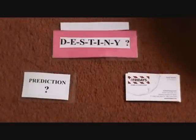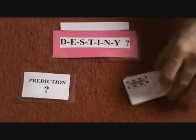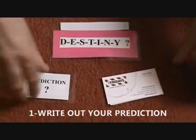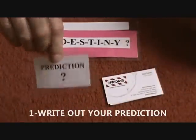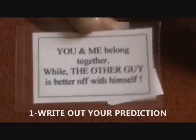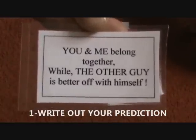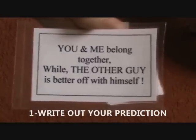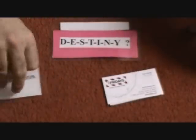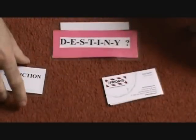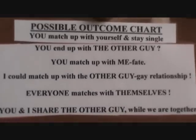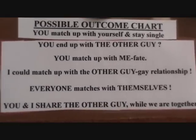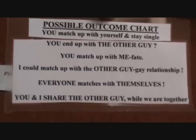So let's learn this trick. It's virtually impromptu — the pack is flat and you can use blank business cards. You're going to need a prediction that says you and me belong together and the other guy is by himself. You can also put out a possible outcome chart if you want to use that.